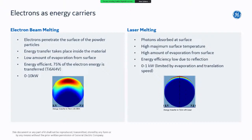Because energy is distributed deeper into the material, we have lower evaporation from surfaces. Energy efficiency is also very high — over 75% of electron energy is transferred into heat or into the material for titanium 64, and in theory beam powers can reach up to 10 kilowatts, compared to much lower values with photon-based production systems.